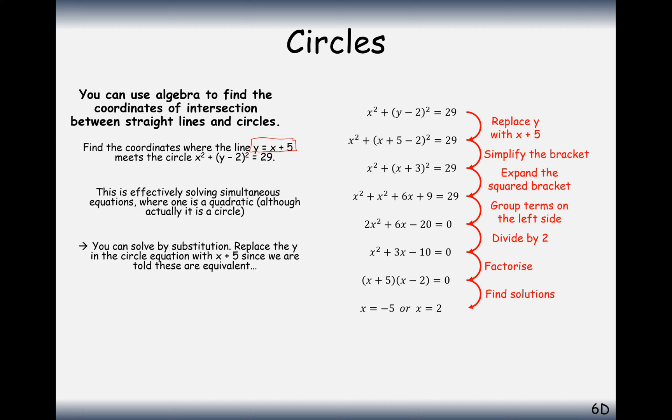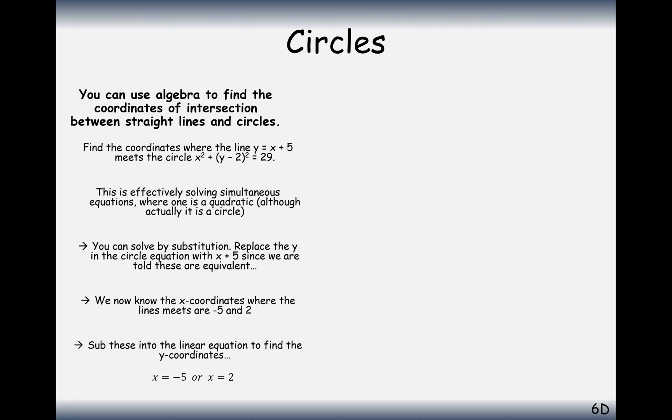What we have to do now is plug these back into the equations of either the circle or the line, probably a bit easier to do it into the line. Given that x is minus 5, the y-coordinate will be 0, and given that the x-coordinate is 2, we're going to plug that in and get y is 7. So the coordinates are going to be minus 5, 0, and 2, 7.